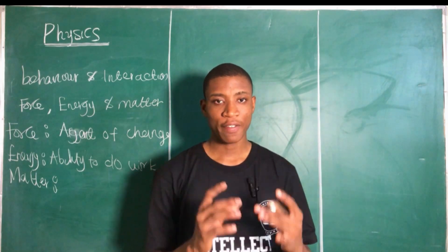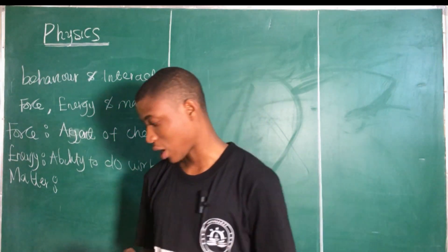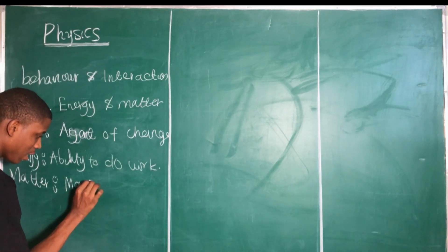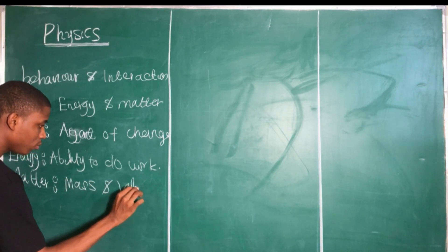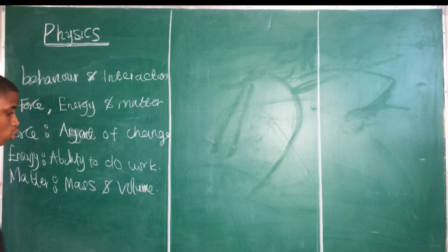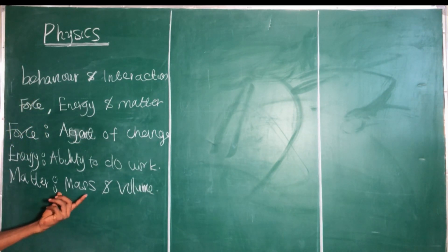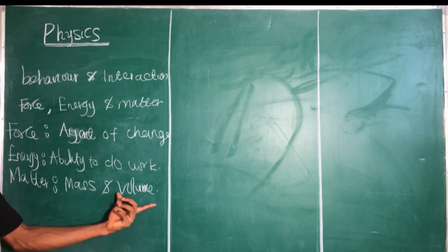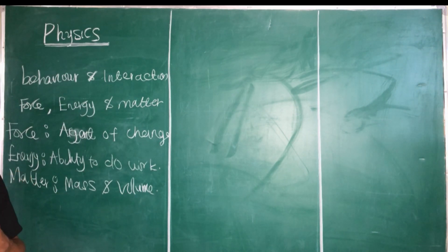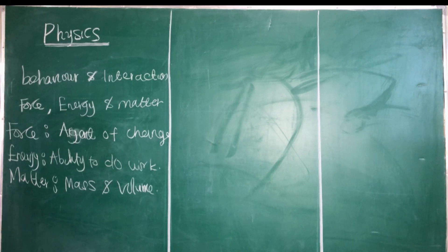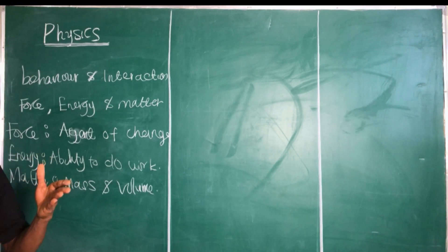We can define matter in two characteristics: mass and volume. Matter is equal to mass and volume. Anything that occupies space has a volume, so that is what matter is.